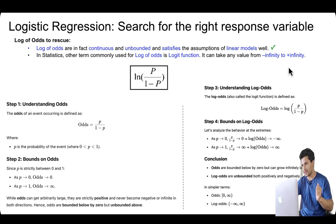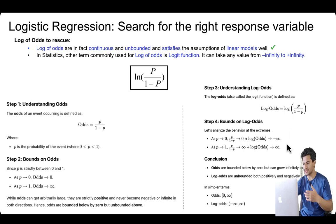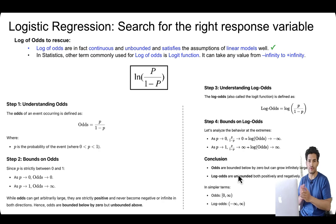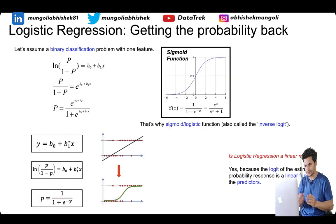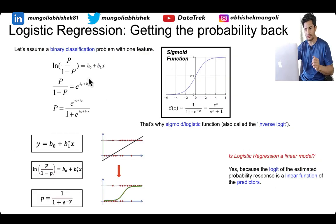Log of odds in machine learning is also called the logit function. Its value ranges from minus infinity to plus infinity: if probability is zero, the term becomes zero and log of zero is minus infinity; if probability is one, the term tends to infinity and log of infinity is infinity. So the range is minus infinity to plus infinity for probability zero to one. Hence we can regress our feature variables to predict the log of odds, and then find a mechanism to convert log of odds back into probability to classify between the two classes.